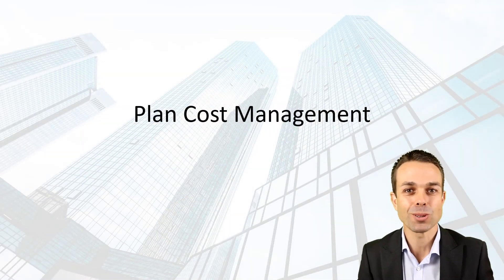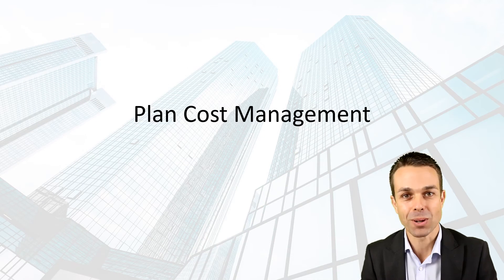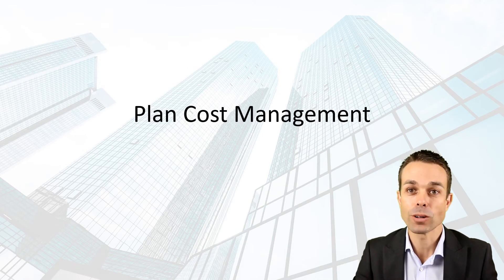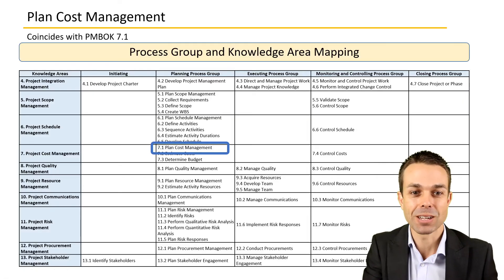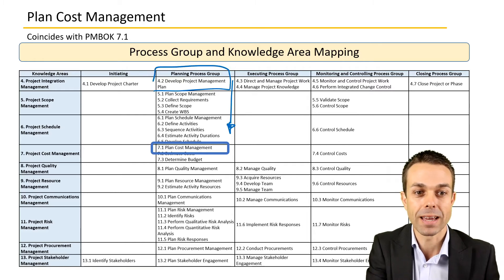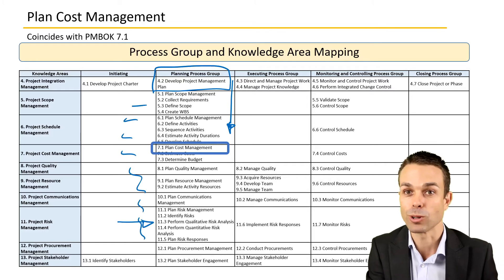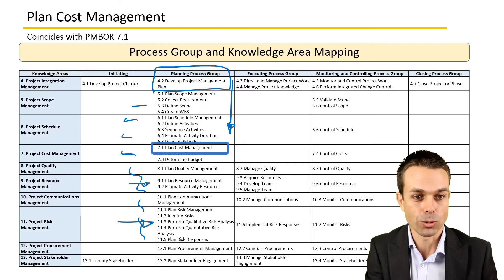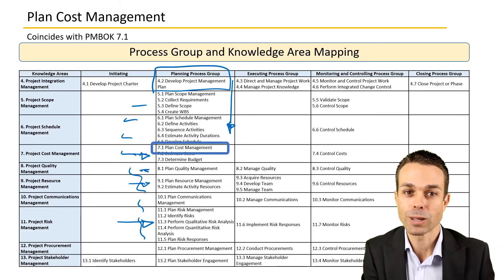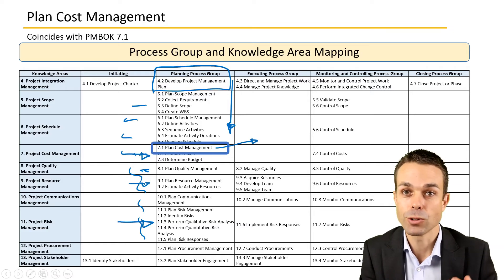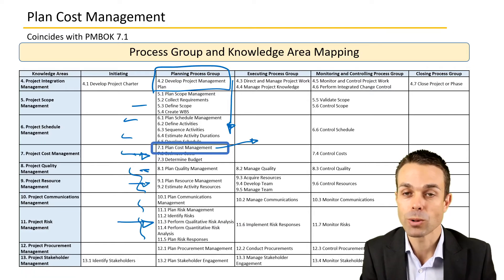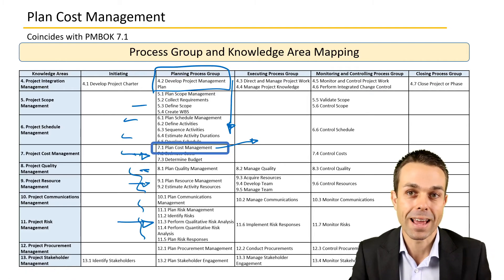Welcome back to the processes from the Project Management Body of Knowledge. This one in particular is Planning Cost Management. We are in the planning process group, putting together the project management plan and all of the bits and pieces that go into it — project risk, quality, resources, and of course cost. Before we go into planning our cost detail, we have to figure out the process we're going to use and what the framework and techniques will be.